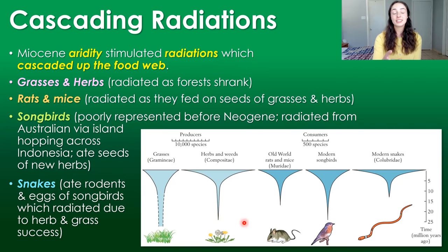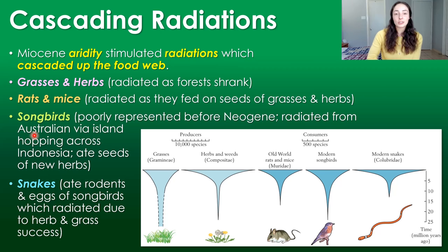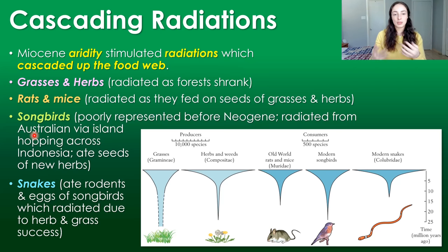The evolutionary response to increased aridity was interesting. Grasses and herbs radiated as forests shrank. Because of this radiation of grasses and herbs, rats and mice — which ate seeds from the grasses and herbs — radiated. Songbirds also radiated because of the radiation of the herbs. Then snakes ate the rodents and the eggs of the songbirds, and they radiated as well. This cascading radiation of species up the food web was driven initially by the increased cooling and aridity.